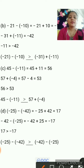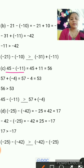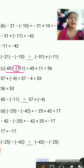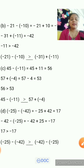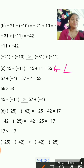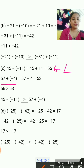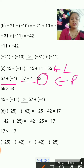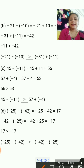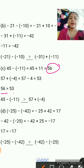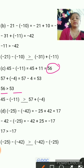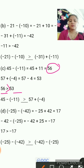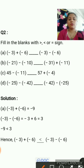Next question: 45 minus minus 11. Minus minus is plus, so 45 plus 11 equals 56 — left-hand side is 56. On the right side: 57 plus minus 4. Plus minus gives minus, so 57 minus 4 equals 53. Left has 56 and right has 53; since 56 is greater than 53, the greater-than sign applies.